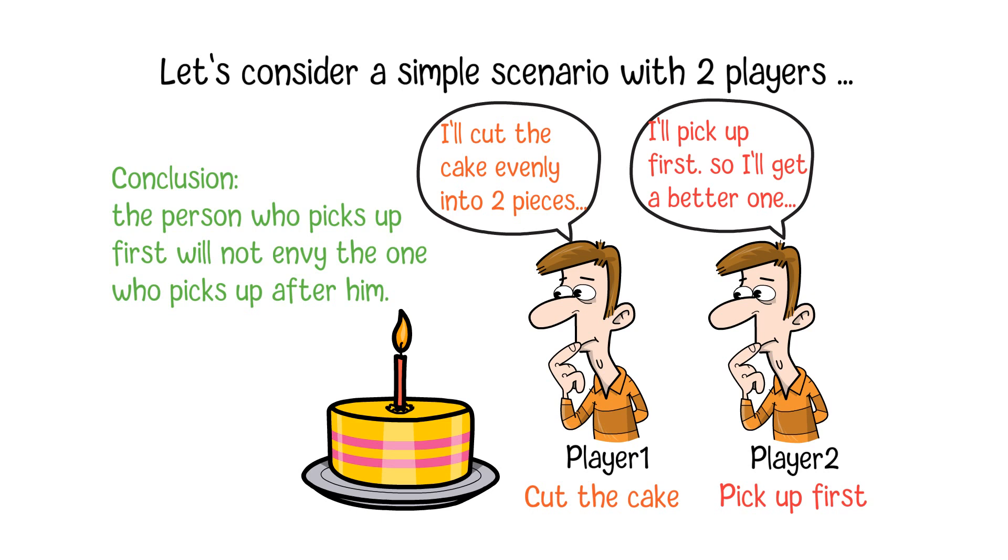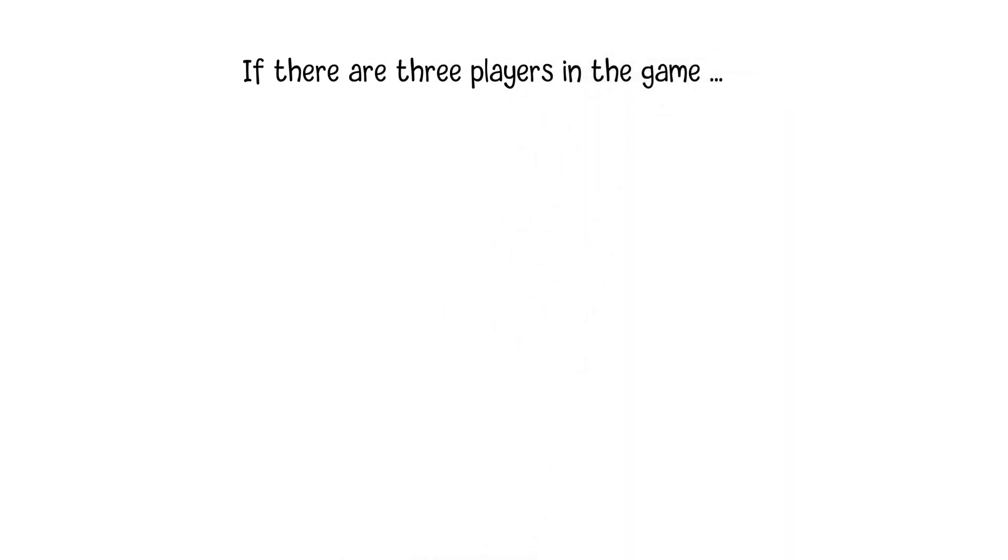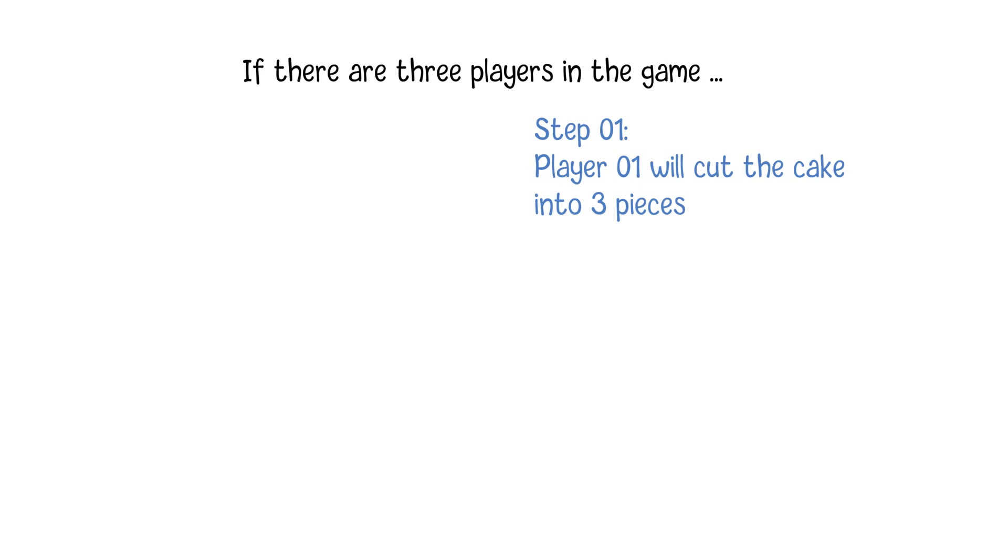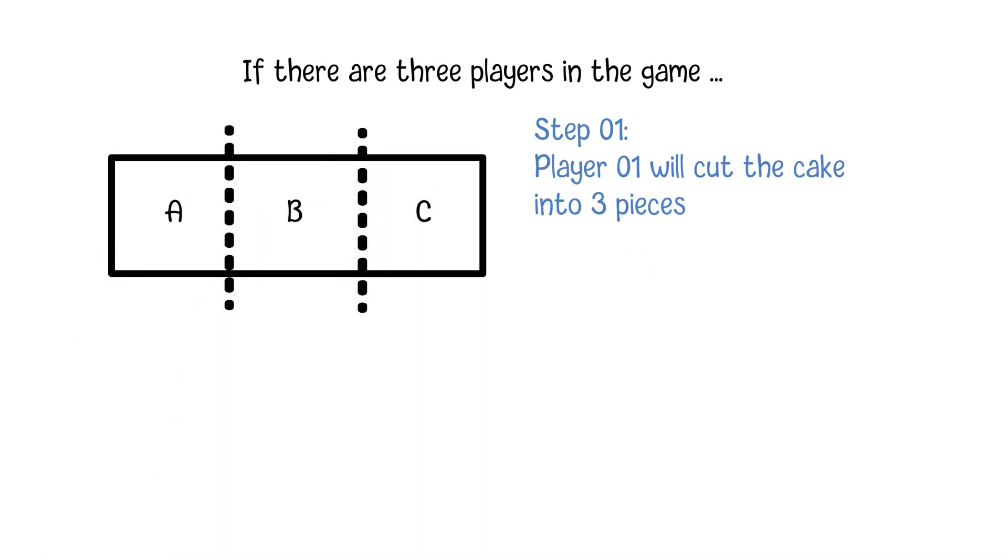If there are three players in the game, the procedure will be more complicated. The first step, player 1 will cut the cake into three pieces from his perspective and let other players choose first. Similar to the two-player case, to avoid the result that he will get the smallest part, player 1 will try his best to divide the cake evenly into three pieces.